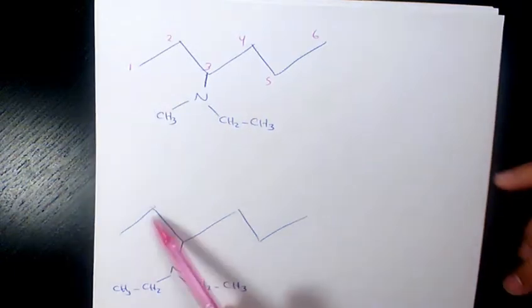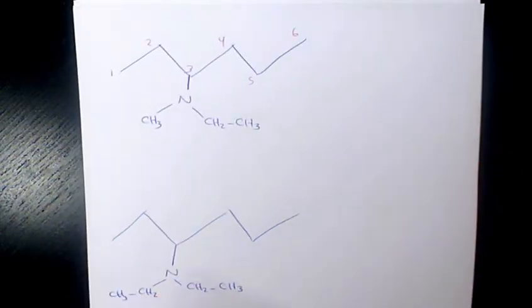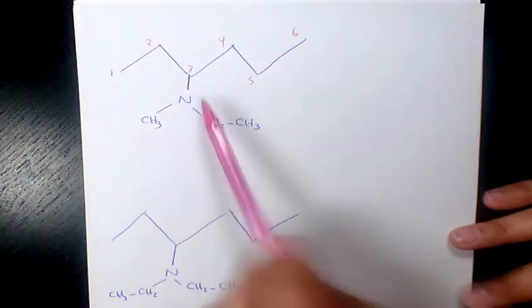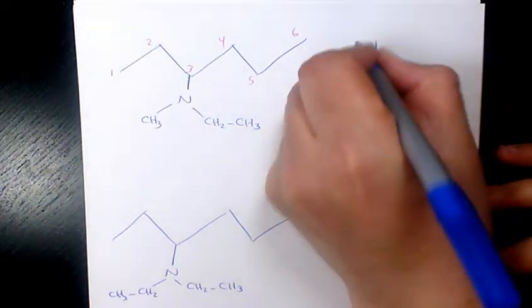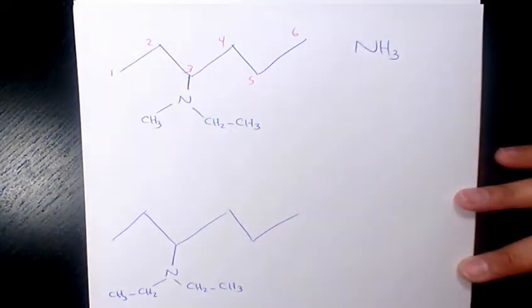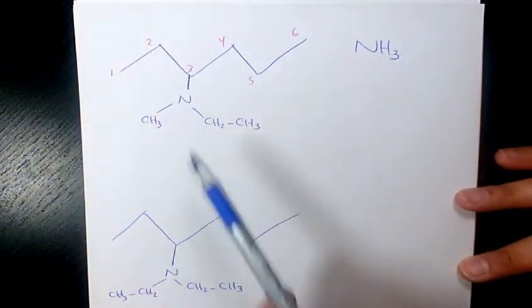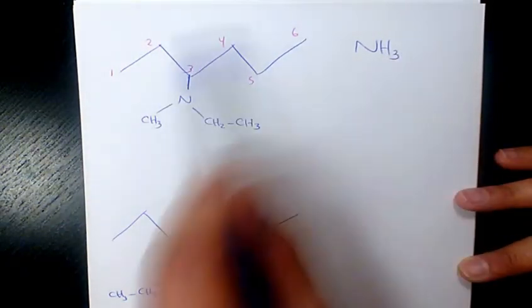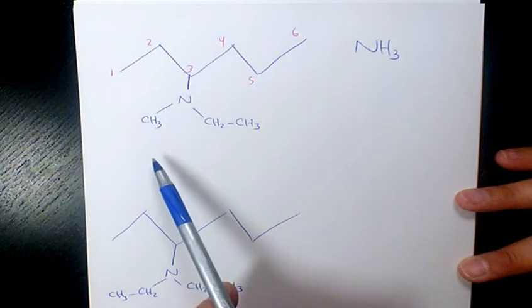And as you see here we are dealing with tertiary amine here, because as you know amines are all coming from ammonia. And if all three hydrogens are replaced with alkyl groups like as you see here, we are dealing with tertiary amine.